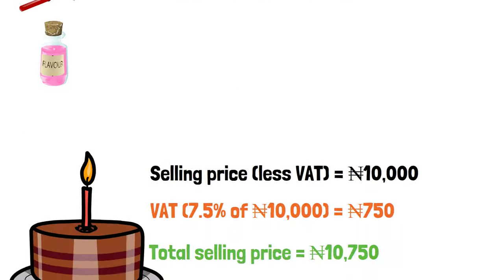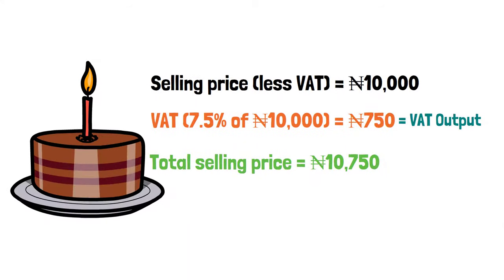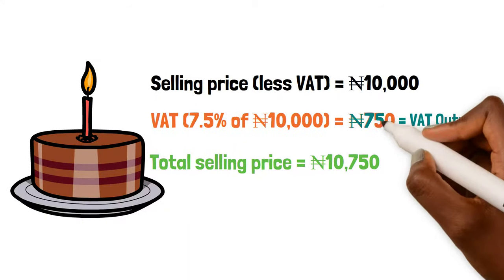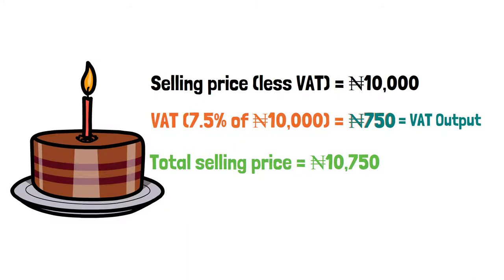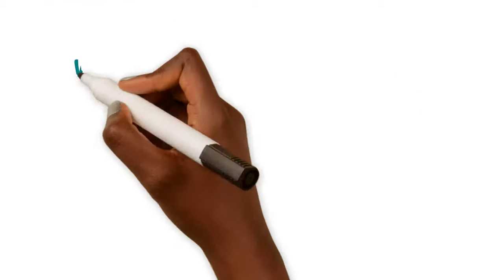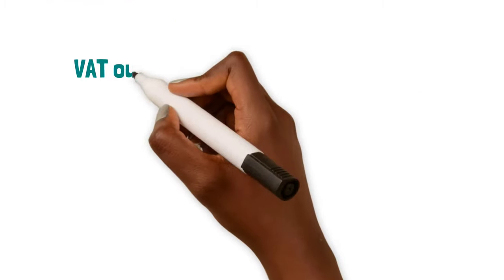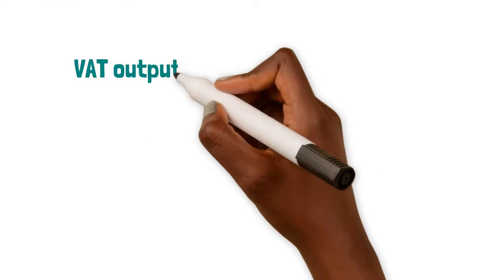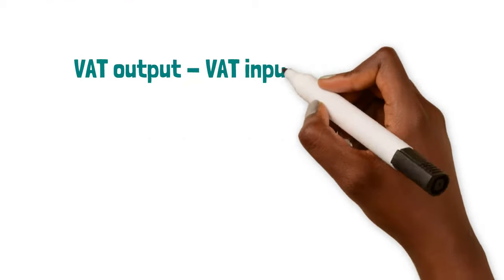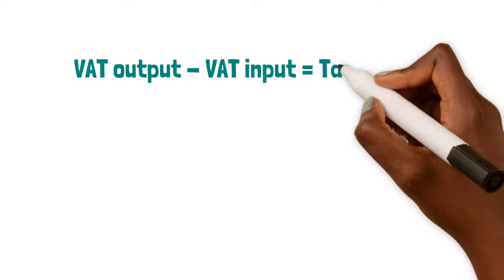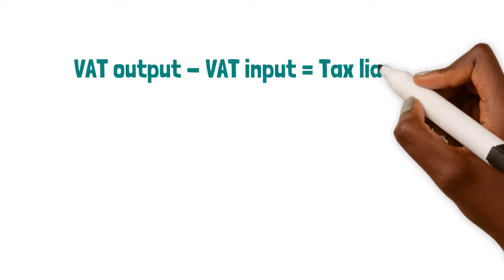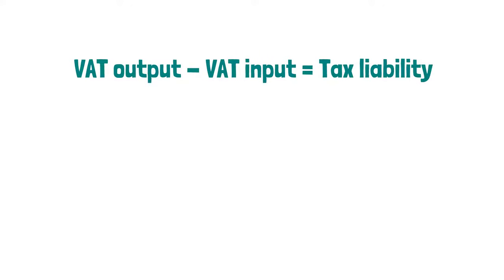This brings the total selling price to 10,750 naira. The total VAT input is 450 naira and the total VAT output is 750 naira. The amount to be remitted to tax authorities — that is your tax liability — is the difference between VAT output and VAT input: VAT output minus VAT input equals tax liability.